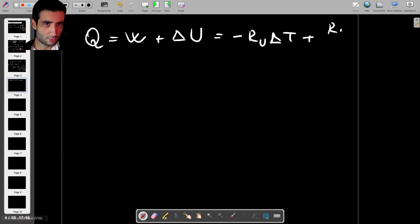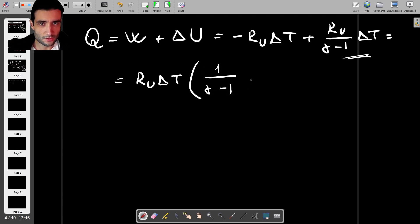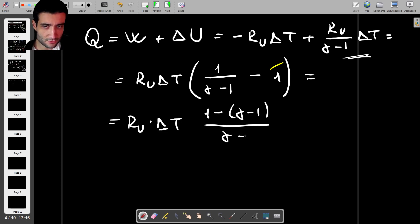So RU over gamma minus 1 delta T. We can factorize the gas constant and delta T so we have RU delta T times I'll start with this term so 1 over gamma minus 1 minus 1 which is RU times delta T and this is 1 minus - we're going to bring this 1 to the same denominator as the previous fraction so this is gamma minus 1 over gamma minus 1. So this is RU times delta T and then 1 minus gamma plus 1 over gamma minus 1 which is RU multiplied by delta T multiplied by 2 minus gamma over gamma minus 1.